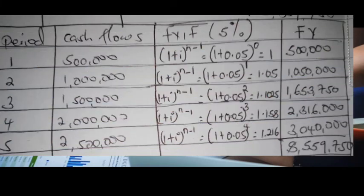For year five, our cash flow is 2.5 million. The future value interest factor is (1 + 0.05)^4, which equals 1.216. Multiplying gives us 3,040,000 — the future value in year five.